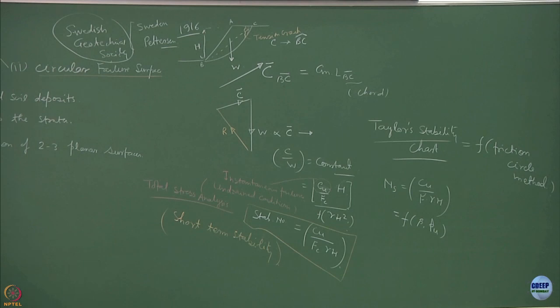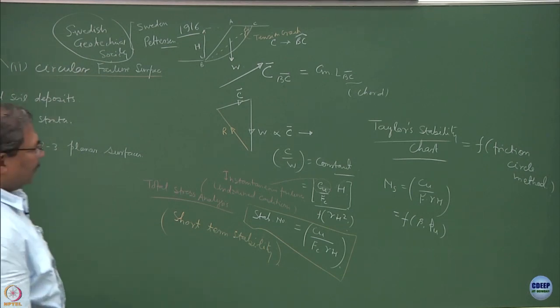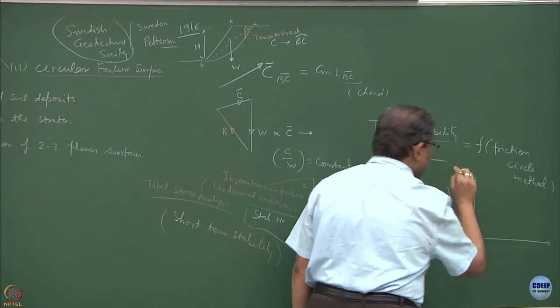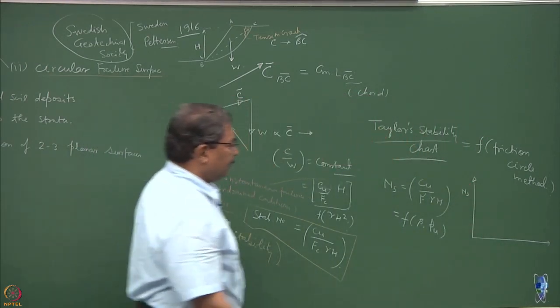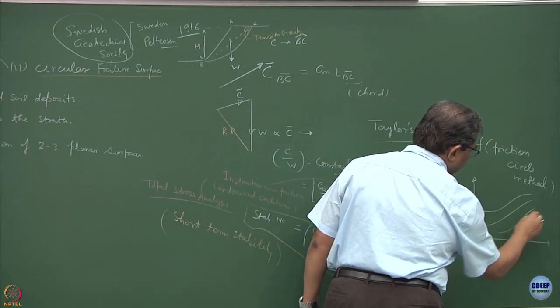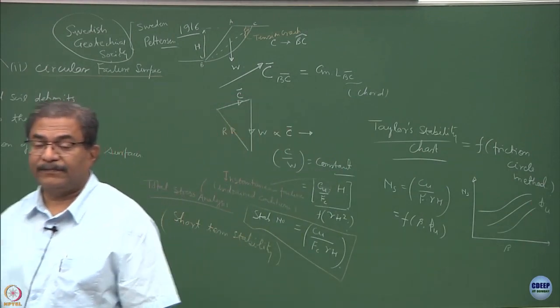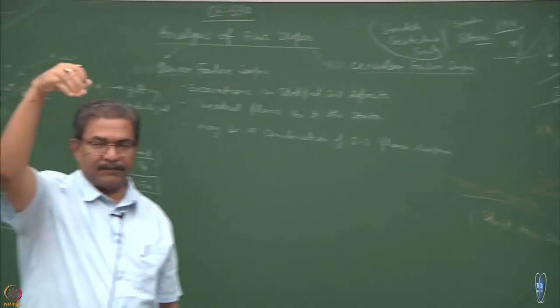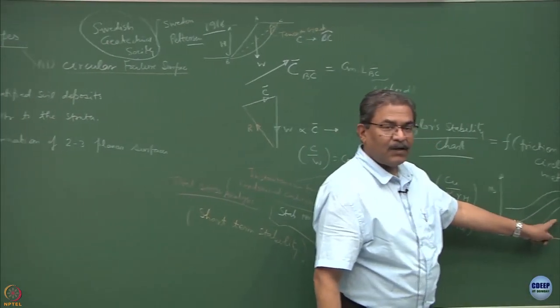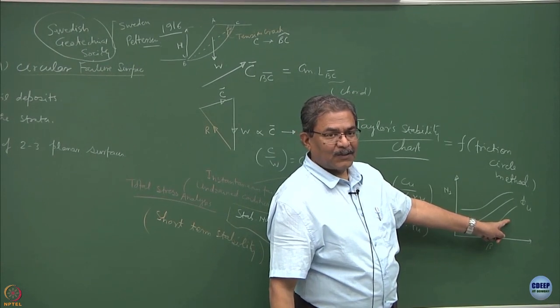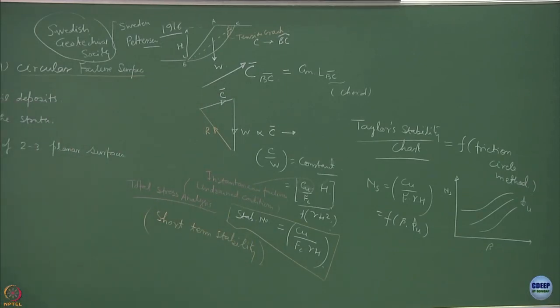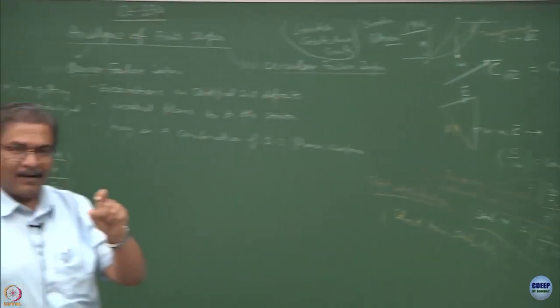The stability charts look like a relationship between the factor of safety or stability number, the beta value, and the values of phi u. Which direction phi u will change? Suppose friction angle increases from top to bottom or bottom to top, which one is correct? That you have to think of.